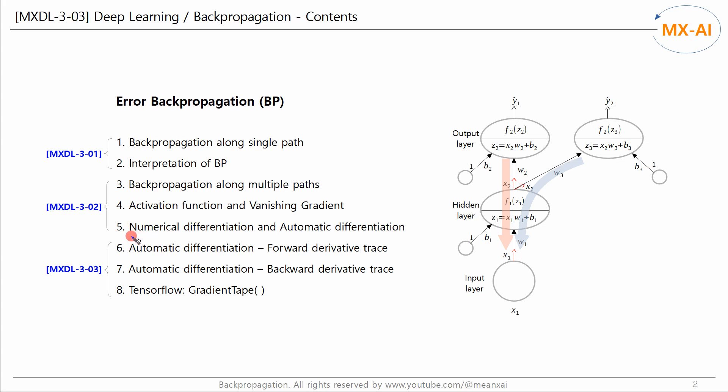In the last video, we used numerical differentiation to find the approximate gradients and used them to update the parameters of the neural network. In this video, we will look at how to find the exact gradients using automatic differentiation.